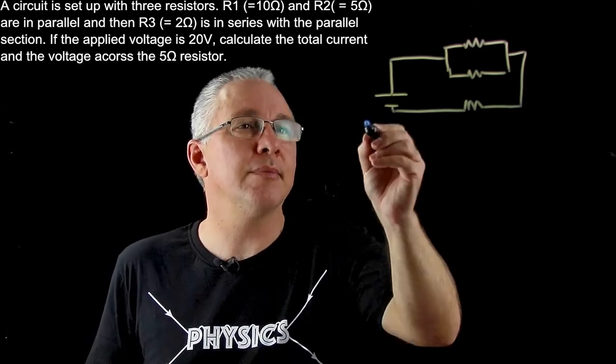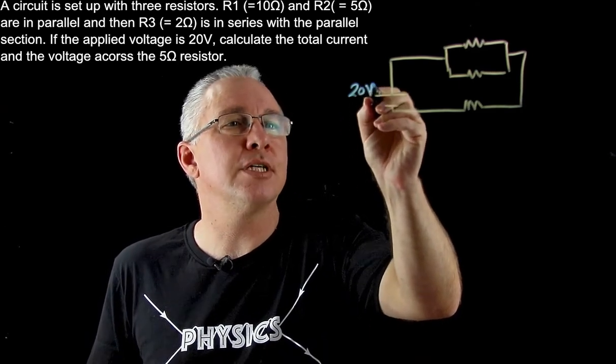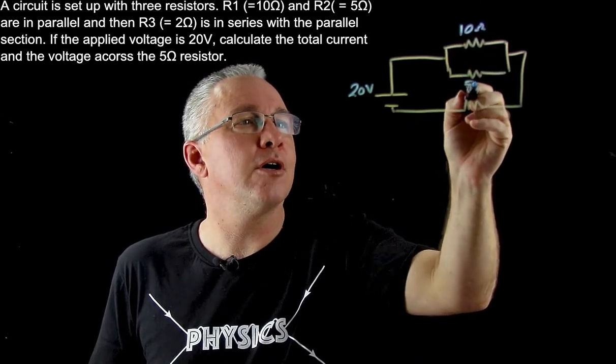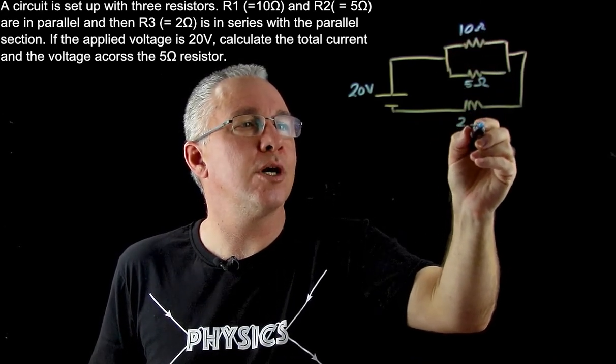Now it's important to label your diagram. So what we have is 20 volts here, 10 ohms here, 5 ohms here, and another 2 ohms here.